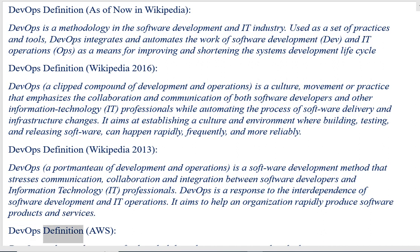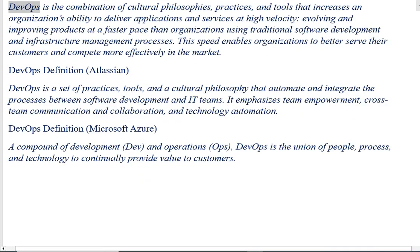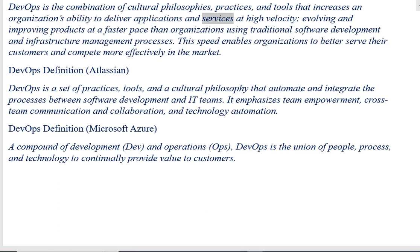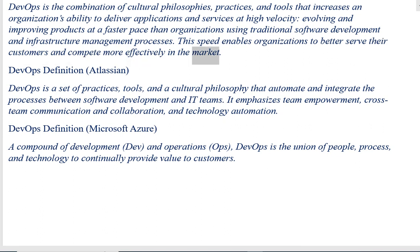DevOps definition, AWS: DevOps is the combination of cultural philosophies, practices, and tools that increases an organization's ability to deliver applications and services at high velocity, evolving and improving products at a faster pace than organizations using traditional software development and infrastructure management processes. This speed enables organizations to better serve their customers and compete more effectively in the market.